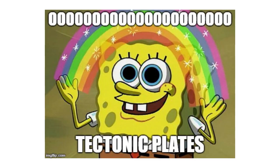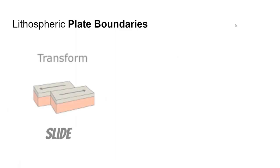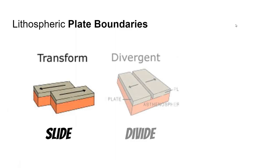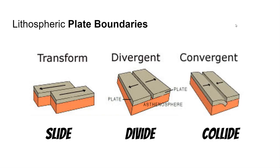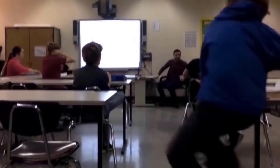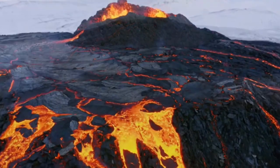These plates interact with one another in three different ways: transform boundaries, divergent boundaries, and convergent boundaries. Essentially, where plates meet on Earth's crust, they slide, divide, and collide. And this is where the majority of geologic activities on Earth occur, including earthquakes and volcanoes.